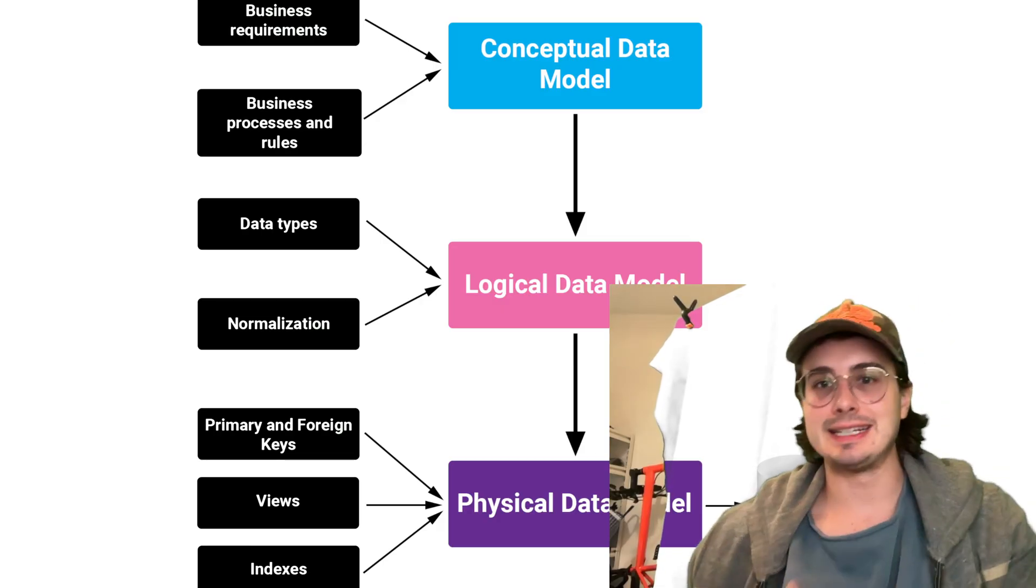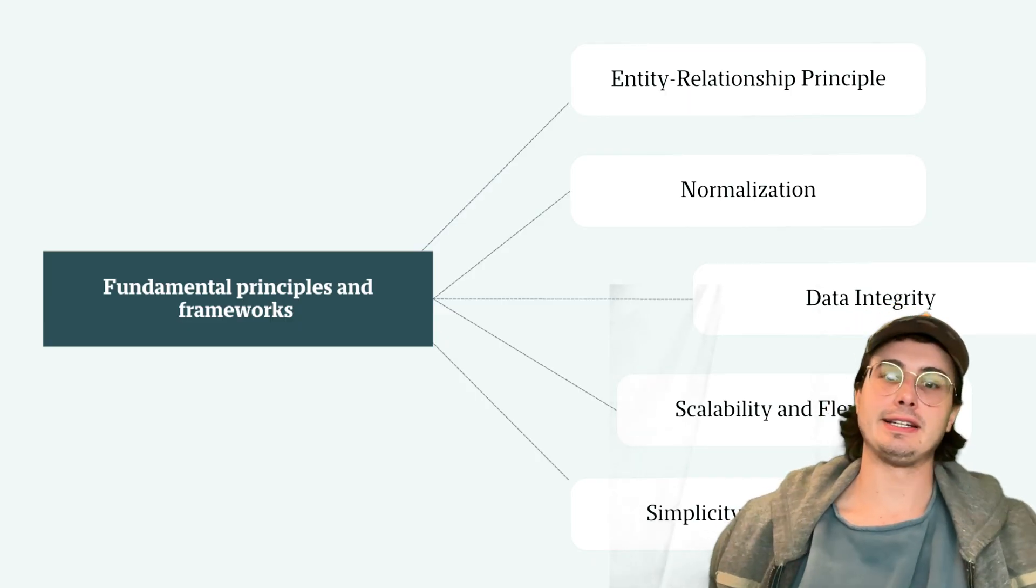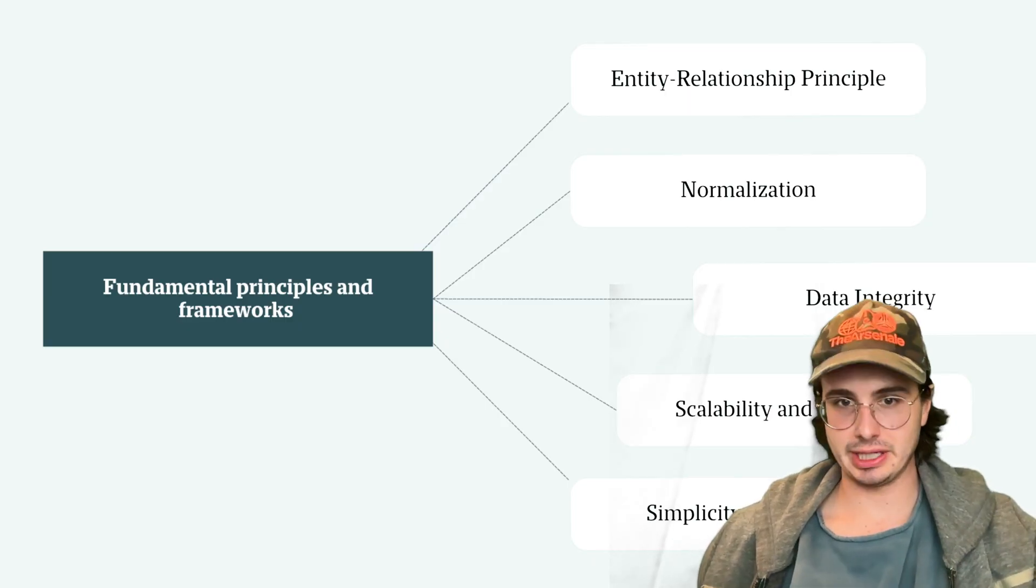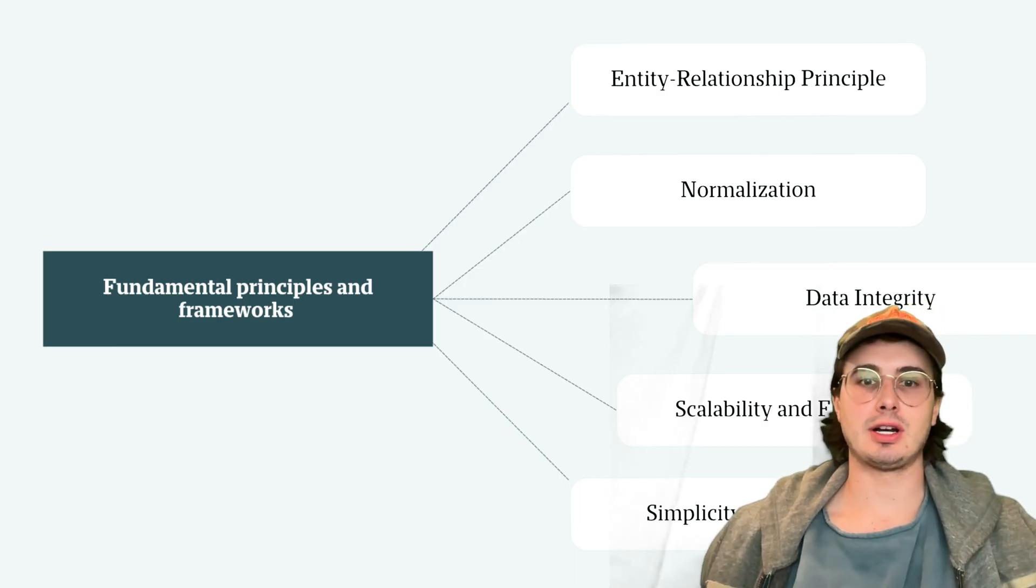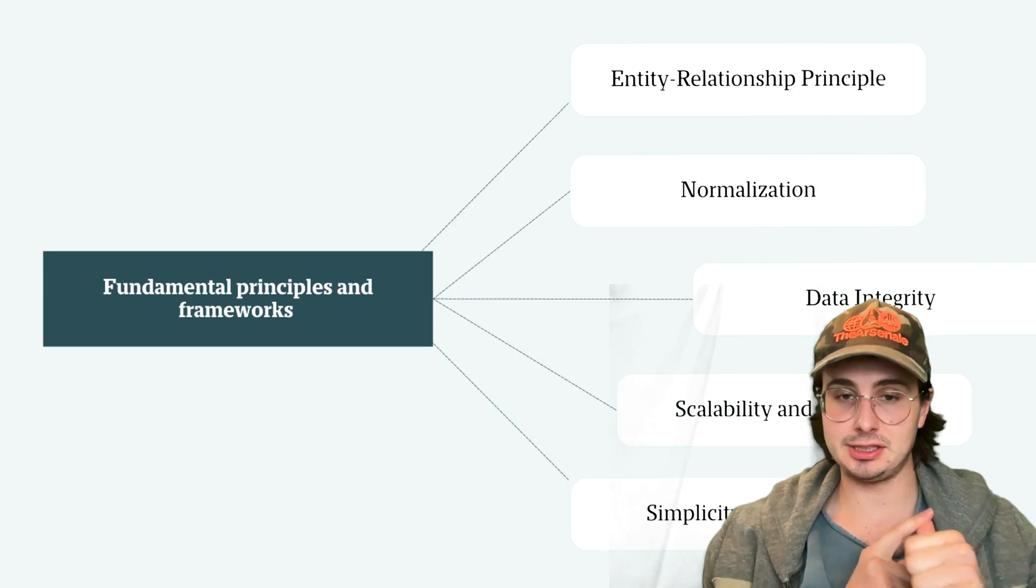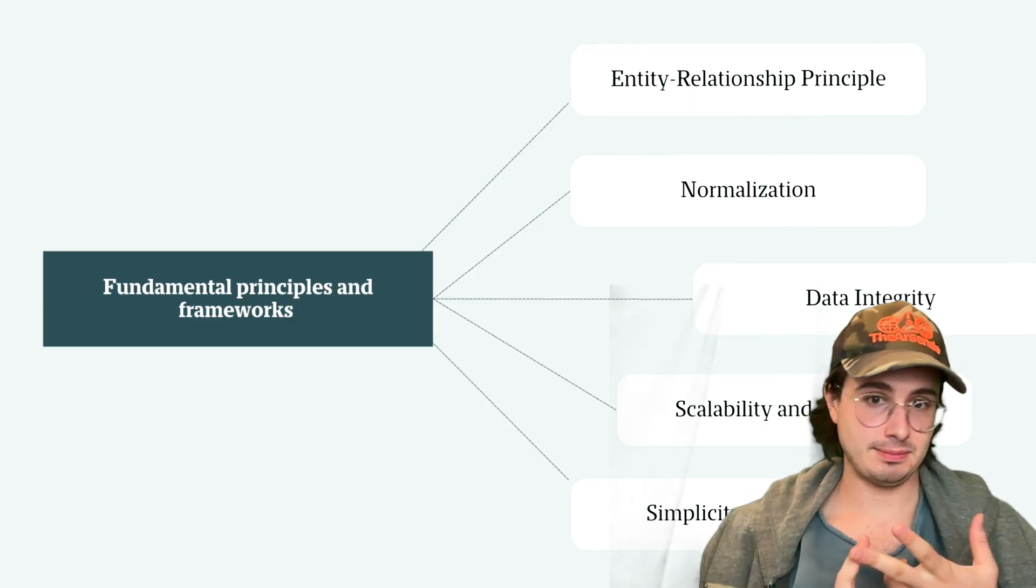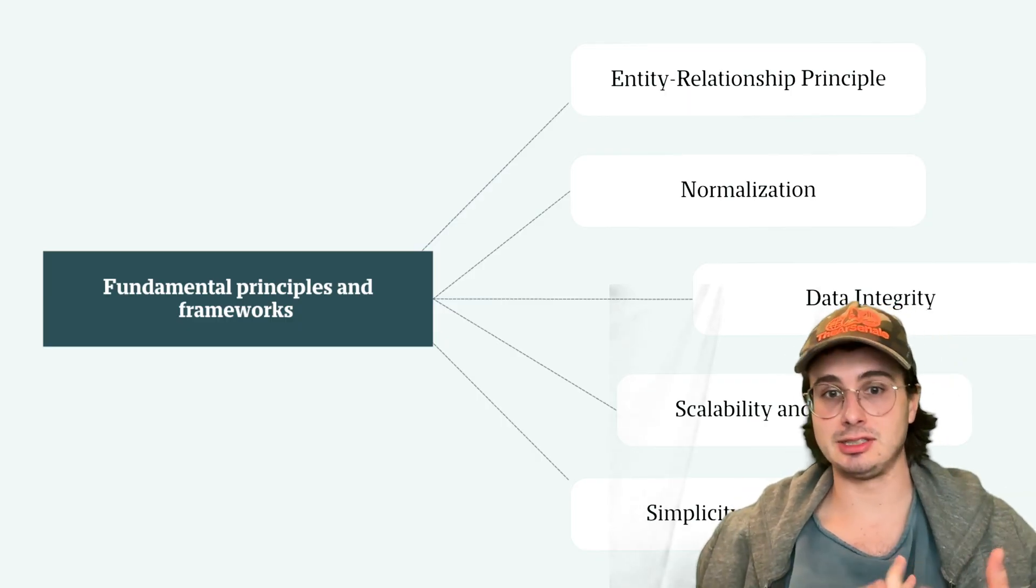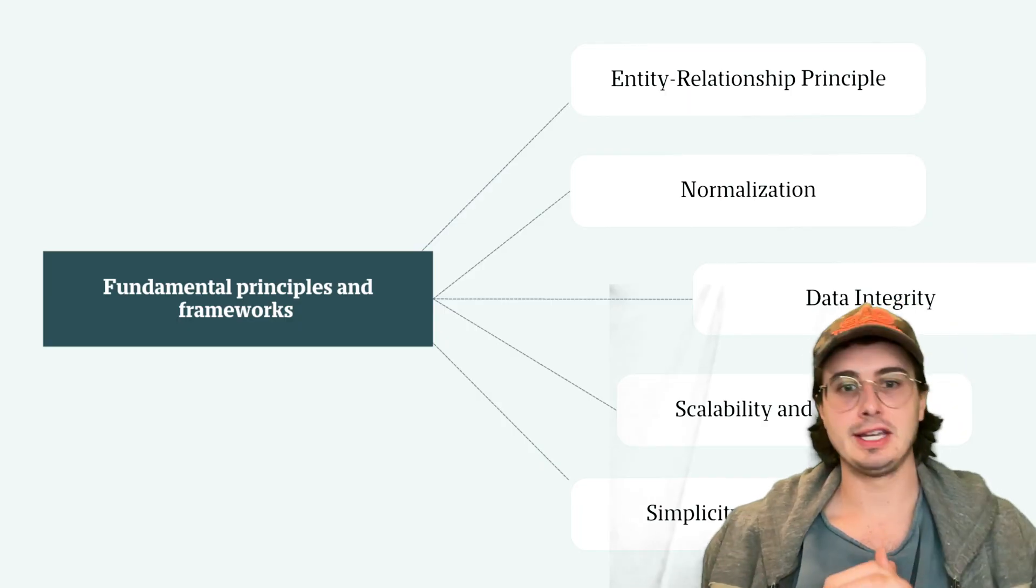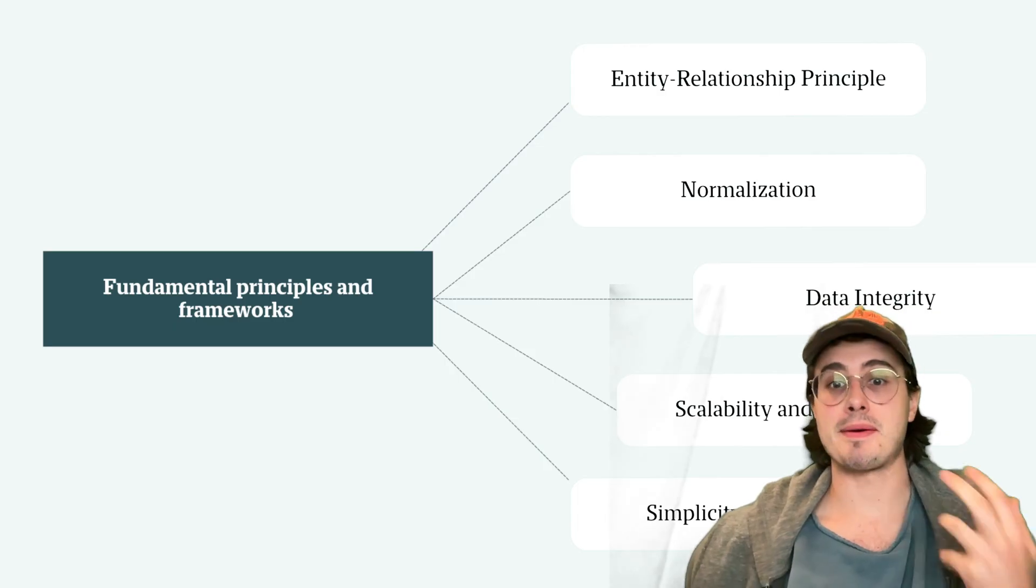The next question is: what are the key principles of good data modeling? Key points to cover are accuracy, that a model reflects real-world business processes; completeness, that all necessary data elements are included; consistency with uniform naming conventions; flexibility for future changes; simplicity that's easy to understand and maintain; and performance optimized for expected usage patterns.